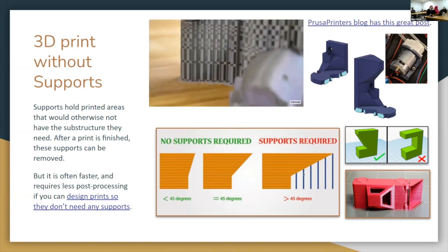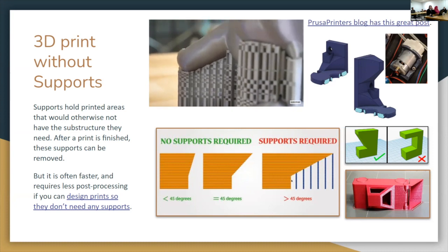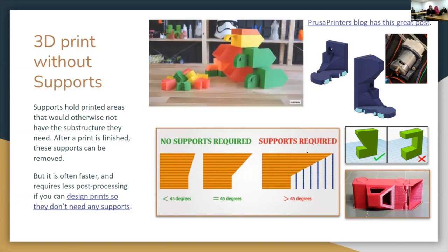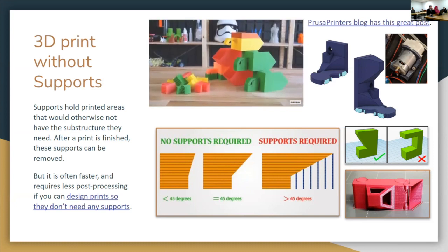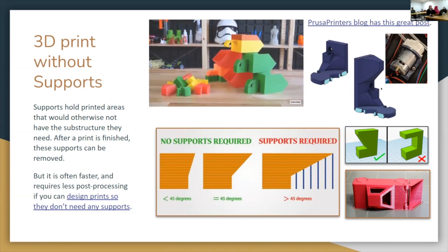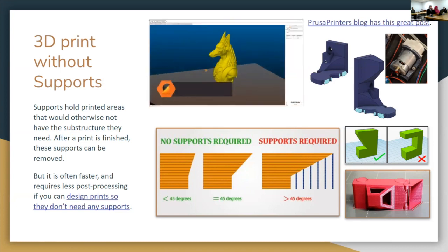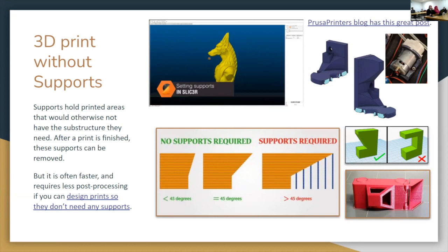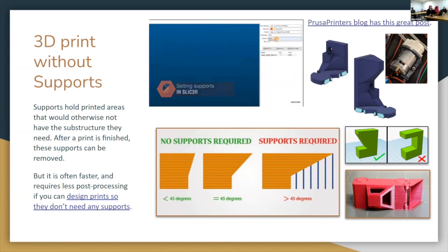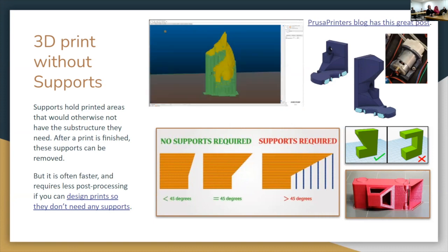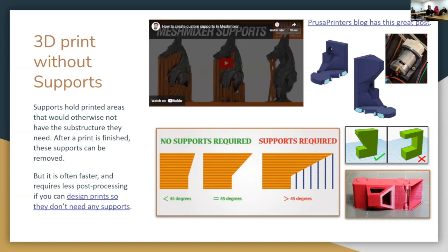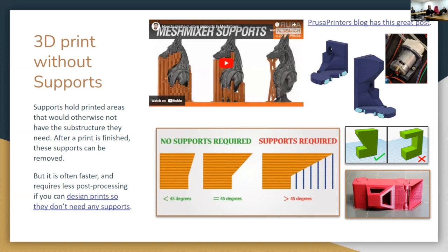If you have more than 45 degrees overhang, you start to need supports. These are motor mounts in my robot bartender — I specifically designed them to not need supports. I print them in a weird orientation, on a face that isn't their bottom, because it's the printable face that makes them print without any overhangs needing supports.